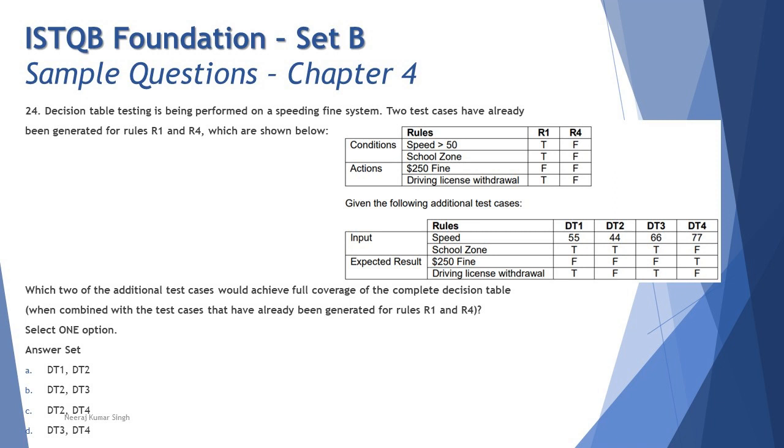Let's look at DT1: it says 55 and true for the school zone. You don't have to worry about the outputs. It's all about the inputs which we have to figure out. DT1 says speed is 55 which is greater than 50, and the school zone is also true. If you compare back to your table, R1 is already covering that, so why would you duplicate that test? So DT1 is ruled out. DT2 says speed is 44 which is less than 50, and the school zone is true. Yes, this is one of our cases which we are looking for: false and true. DT3 is 66 and true, which is again true and true. DT4 is 77 and false, that means true and false is another combination which we are looking for.